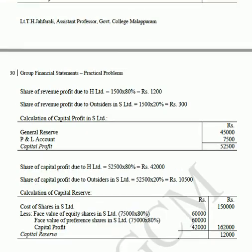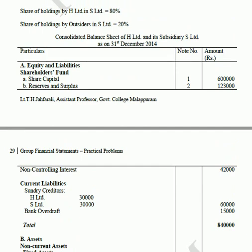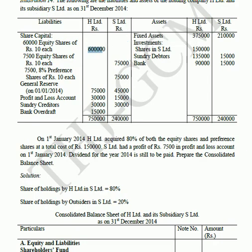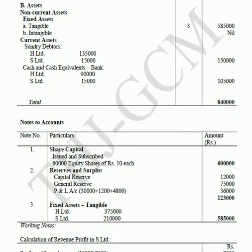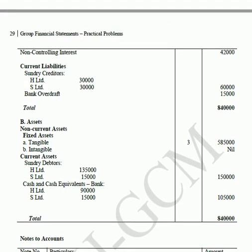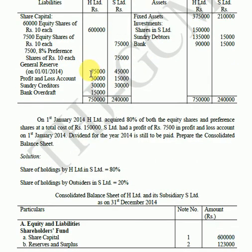The non-controlling interest is Rs.42,000 and this forms part of the consolidated balance sheet. In the first section - equity and liabilities - under shareholders' funds, share capital is Note 1. The holding company share capital is 60,000 equity shares of rupees 10 each, amounting to Rs.6,00,000. Note 2 is reserves and surplus, which includes a general reserve of Rs.75,000 in the holding company and a profit and loss account of Rs.30,000.